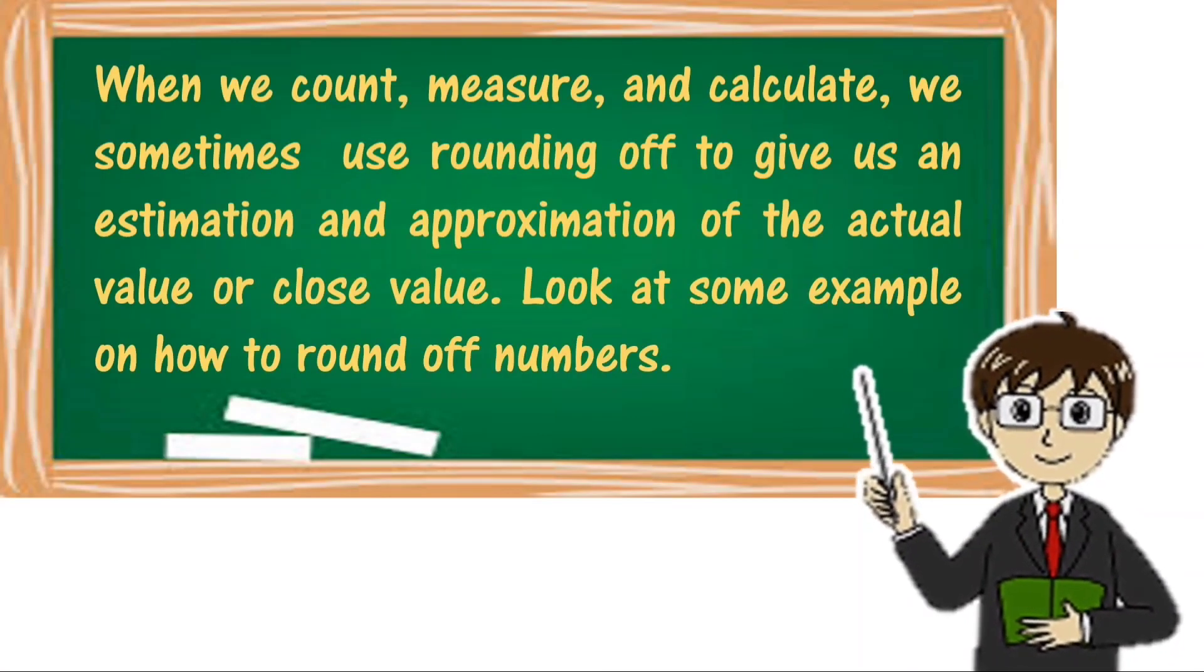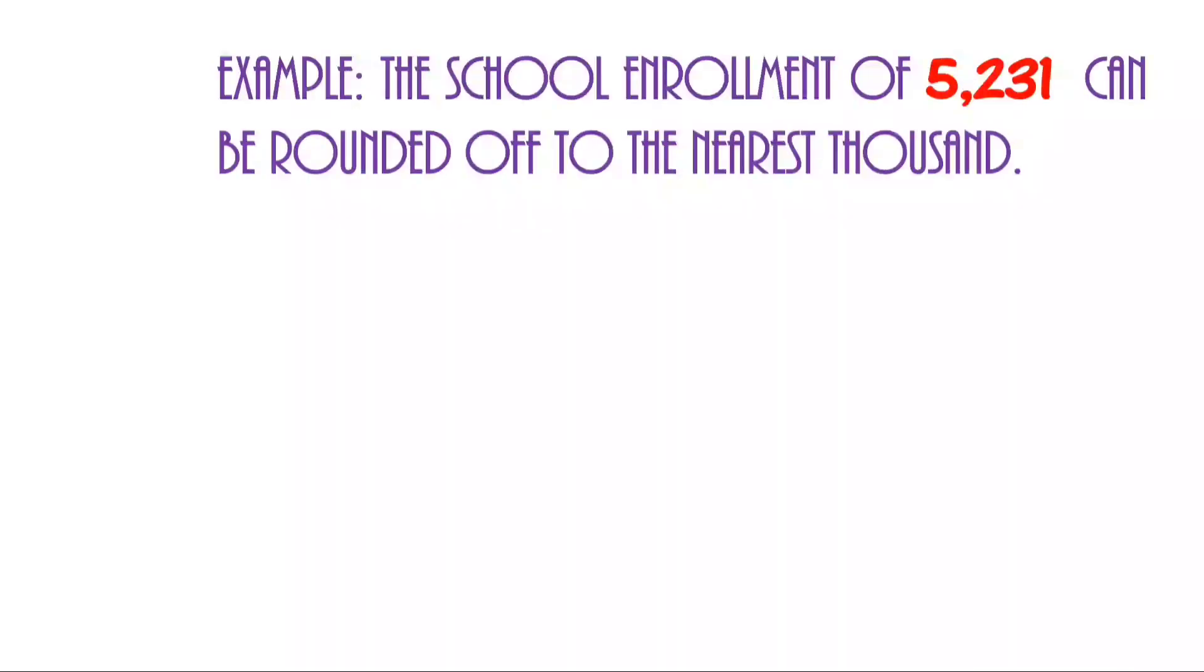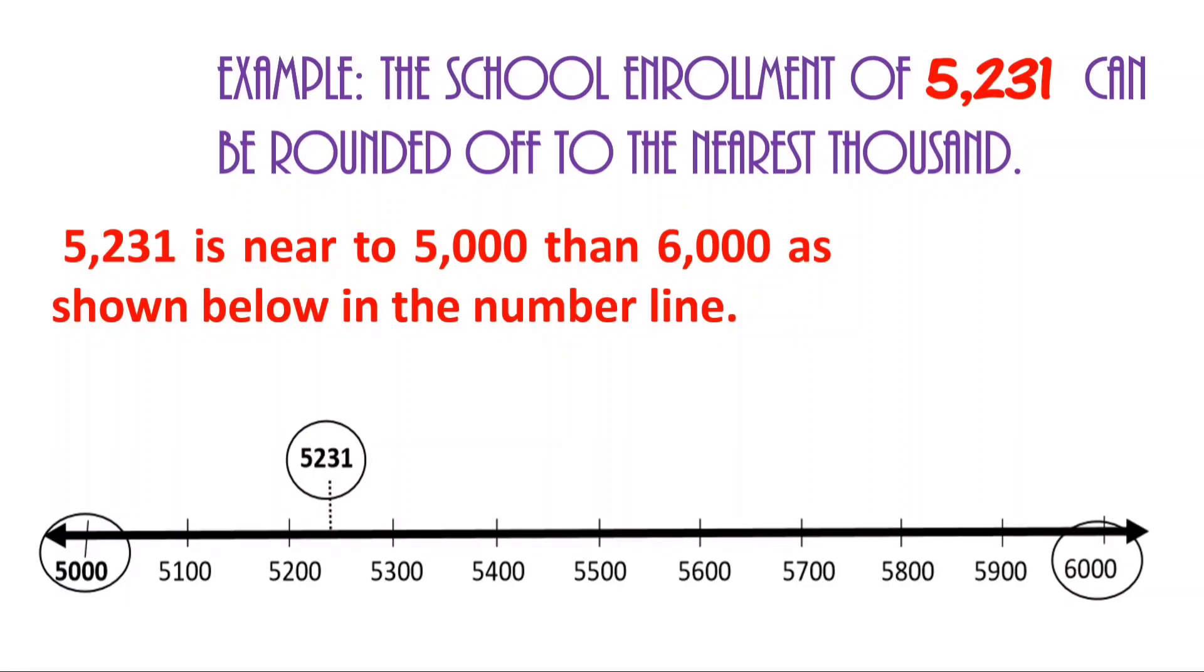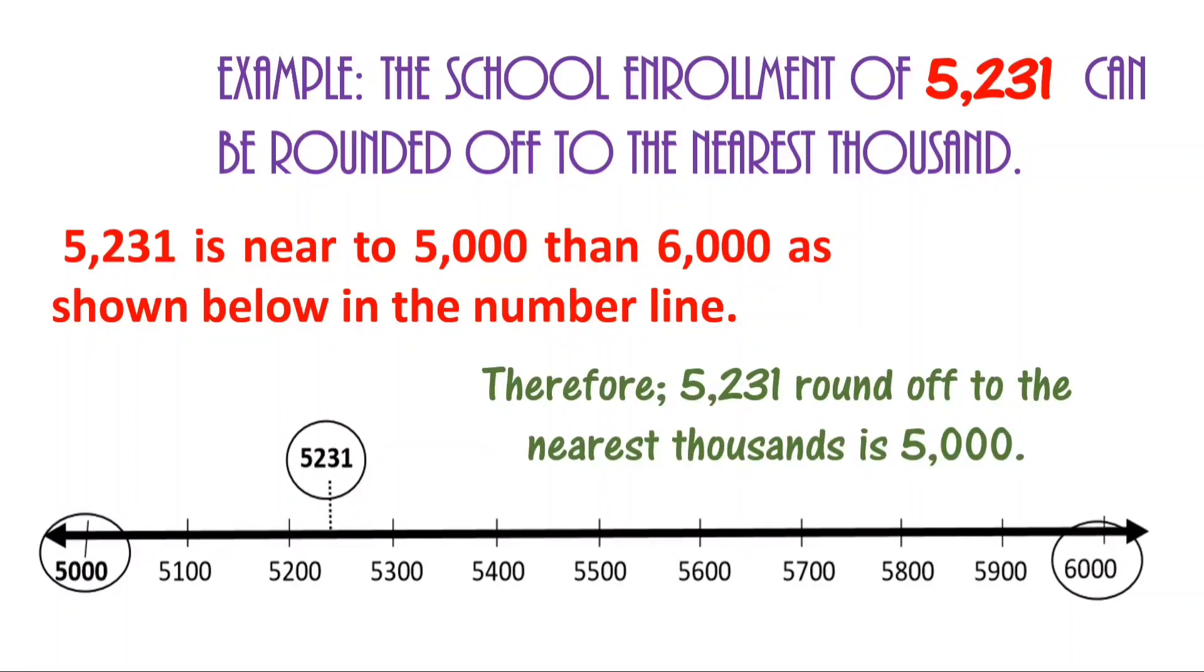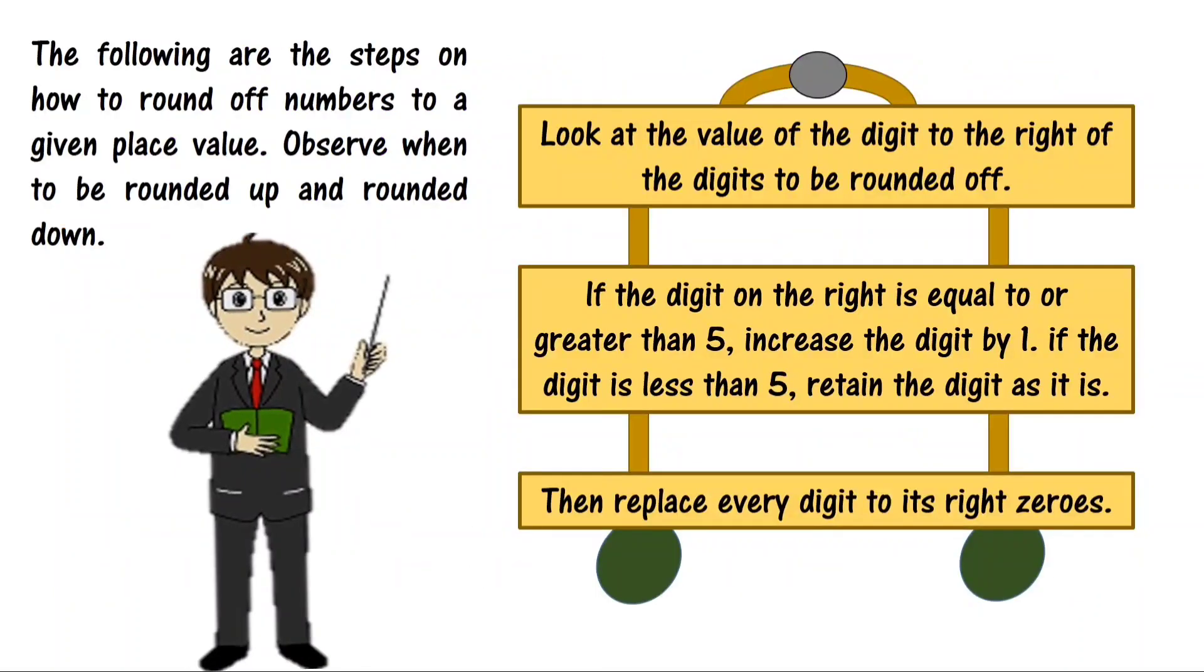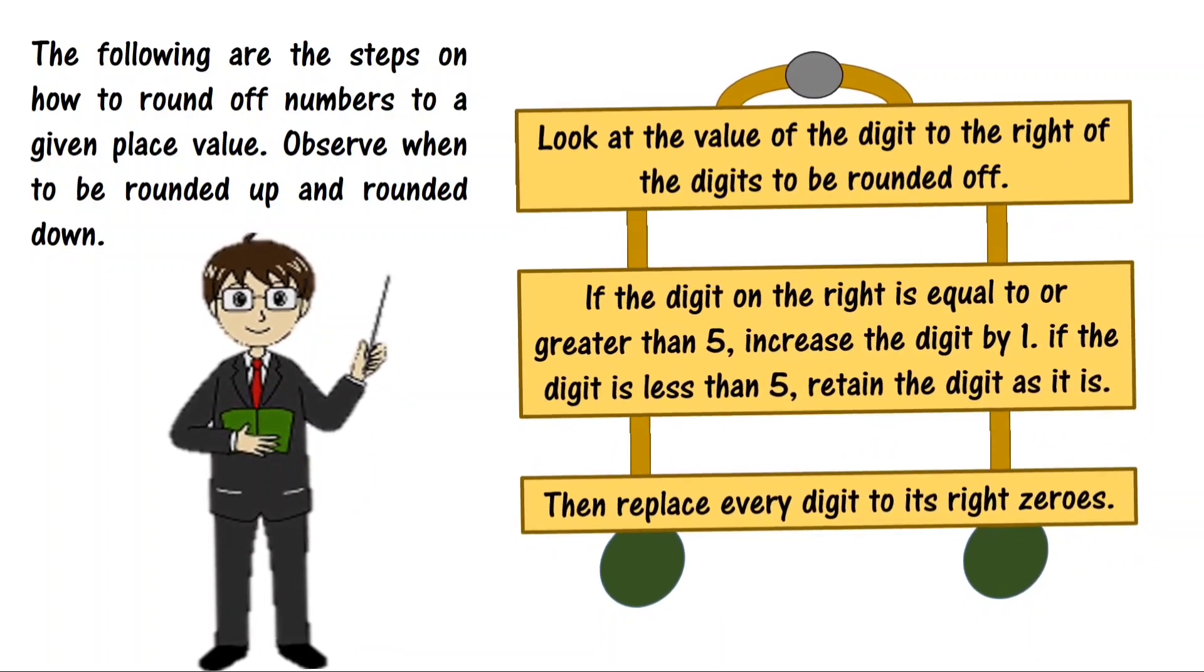When we count, measure, and calculate, we sometimes use rounding off to give us an estimation and approximation of the actual value or close value. Look at some examples on how to round off numbers. Example: The school enrollment of 5,231 can be rounded off to the nearest thousand. 5,231 is nearer to 5,000 than 6,000 as shown below in the number line. Therefore, 5,231 rounded off to the nearest thousand is 5,000.